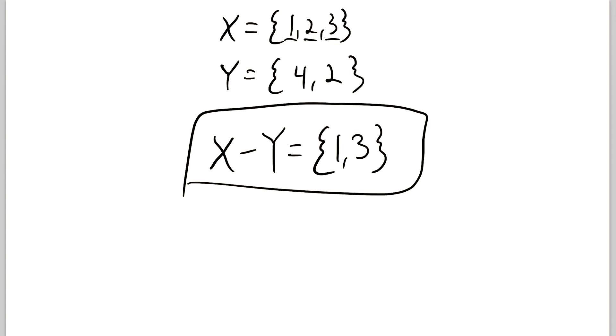So X minus Y is just the set containing one and three. These are the elements of X that aren't in Y. So set subtraction works just how you'd think.